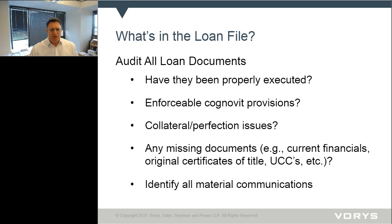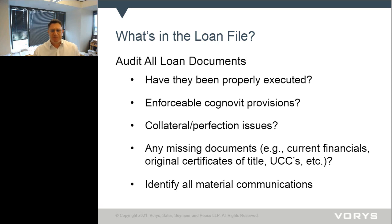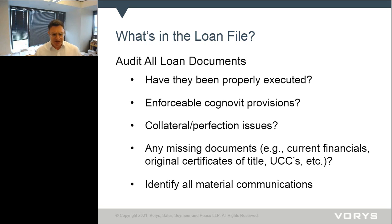Many banks have internal checklists, and we often create these. It's very helpful before you jump into a credit audit to develop a comprehensive internal checklist that covers all the documents. The due diligence list normally includes going over your notes, guarantees, mortgages, security agreements, insurance, and environmental indemnities. Whether it's a real estate loan or a C&I loan, there will be different things you're looking for, but you want to make sure everything you expect to be in the loan file is there. Having a due diligence checklist as you go through the loan file is very helpful so you can check off and ensure you've done a comprehensive review.